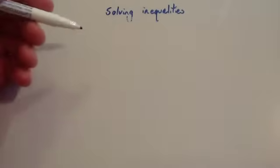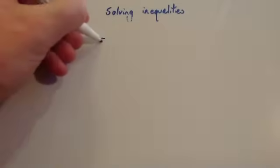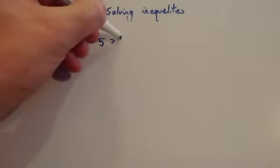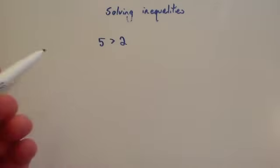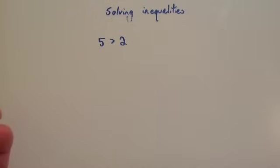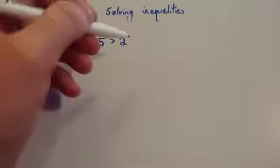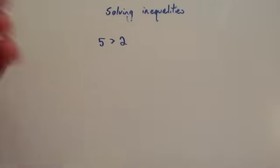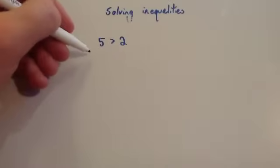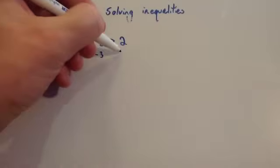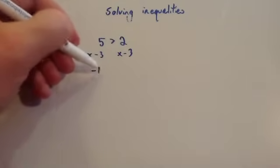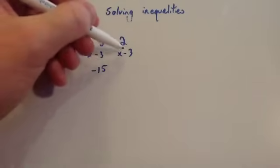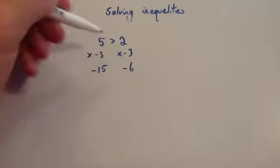Before we carry on, I just want to point something out. Obviously 5 is bigger than 2. Whenever you times an inequality by a negative, or divide by a negative, you've got to be very careful. Let's see what would happen if I times both of these by minus 3. So times by minus 3 on both sides: 5 times minus 3 is minus 15, and 2 times minus 3 is minus 6.